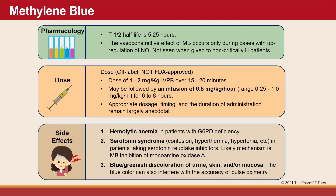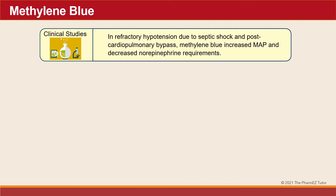Side effects can include hemolytic anemia in patients with G6PD deficiency, serotonin syndrome in patients taking serotonin reuptake inhibitors, and it also can cause a blue-green discoloration of urine, skin, and/or mucosa. The blue color can also interfere with the accuracy of pulse oximetry. In refractory hypotension due to septic shock and post-cardiopulmonary bypass, methylene blue increased mean arterial pressure and decreased norepinephrine requirements.